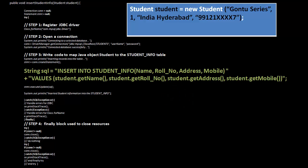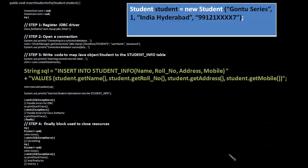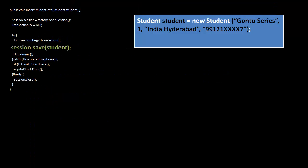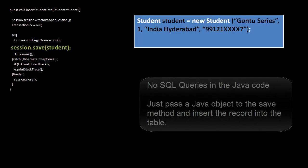Hibernate says: as a Java programmer, why are you writing SQL queries in your Java application? Just leave that job to me. Pass the Java object you want to store or persist, and implicitly I will generate an optimized query and store the data into the table. So if you are using Hibernate, the same code would look like this — you are relieved from writing SQL queries, and almost 80% of the lines of code are reduced, which means better code readability.